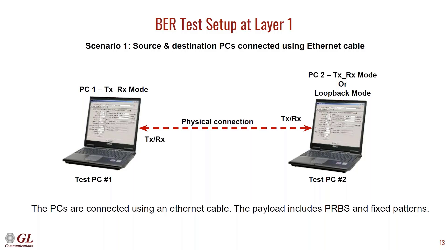When we say network, generally there will be a set of systems attached to networking devices like switches, routers, and gateways, which work at different layers of the OSI model using various protocols. The Packet Check application helps test the functionalities of such network devices and also provides an overall analysis of the network. The following slides will explain how Packet Check can be used to test the network at various layers. The current slide explains how we can test the network at the physical layer using two Packet Check instances.